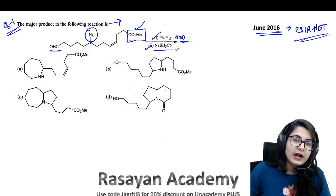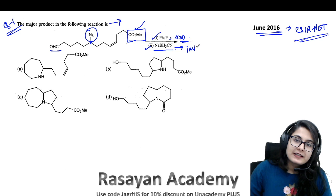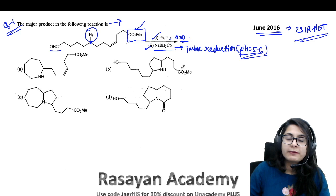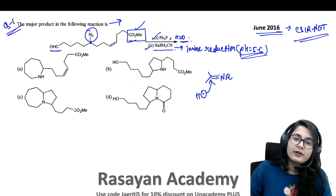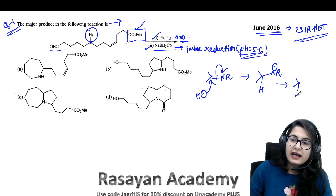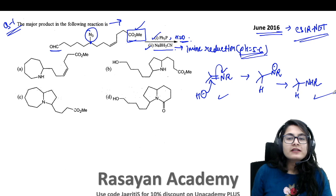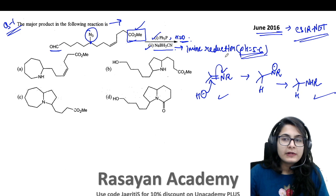The second step is NaBH3CN, sodium cyanoborohydride. Cyanoborohydride is popular for doing imine reduction specifically — the imine reduction at pH around five to six. Your carbonyl when it reacts with an amine with removable protons forms an iminium ion, and this reagent is popular for reducing the iminium to an amine. So this is the chemoselective reagent for imine-to-amine reduction.